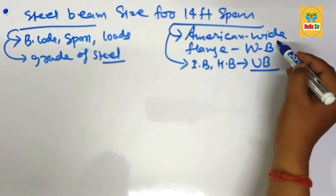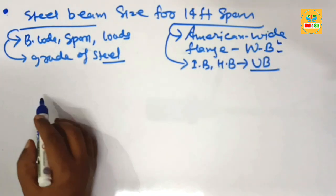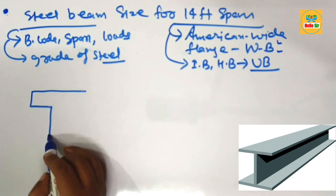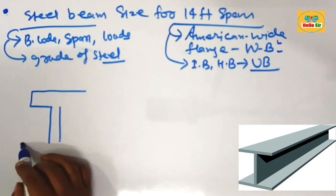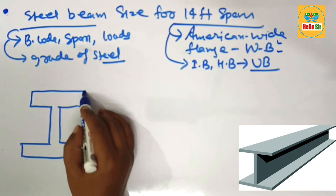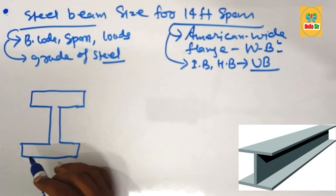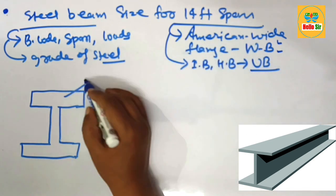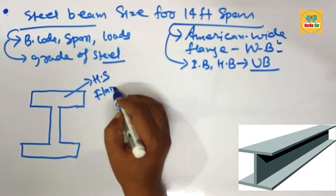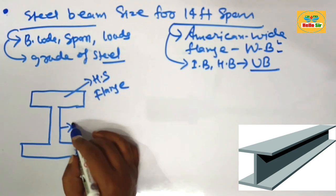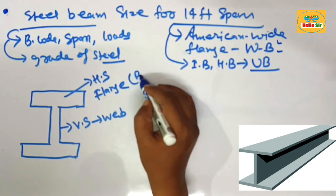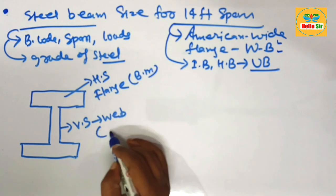First, let's understand the American Wide Flange beam. Here we make a rough diagram to understand this beam and its different parts. The horizontal section of the beam is known as the flange, and the vertical section of the beam is known as the web. Generally, the flange resists bending moment and the web resists shear forces acting on it.